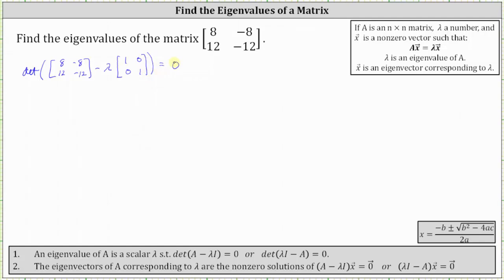Next, we'll perform scalar multiplication with λ, which gives us the determinant of the matrix [8, -8, 12, -12] minus the matrix [λ, 0, 0, λ] equals zero.